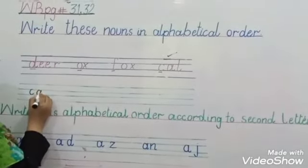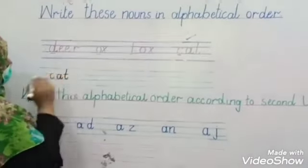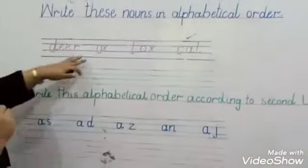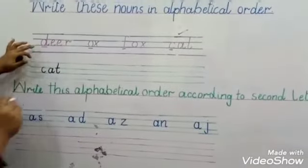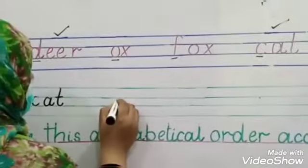So tick here and write the cat below the deer. C, A, T, cat. Next check these words. Yes, deer. Tick here and write the deer.